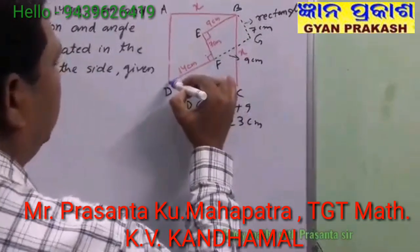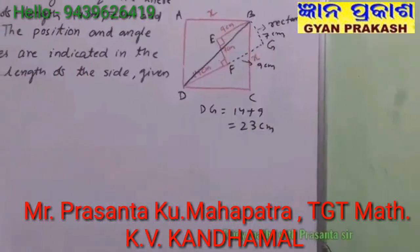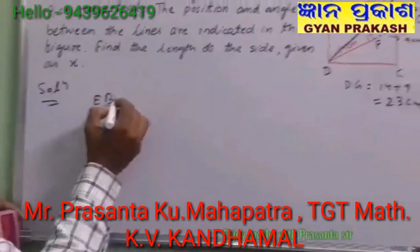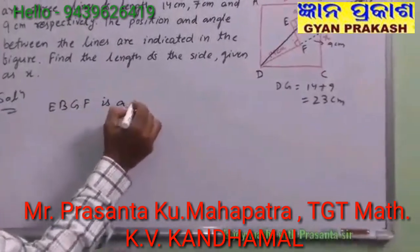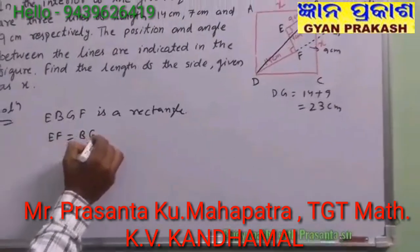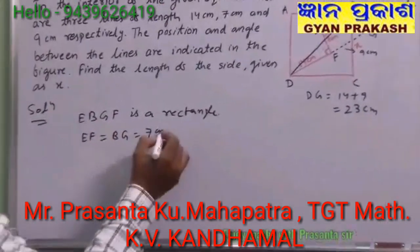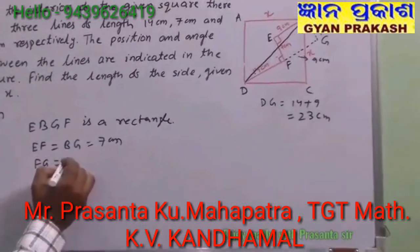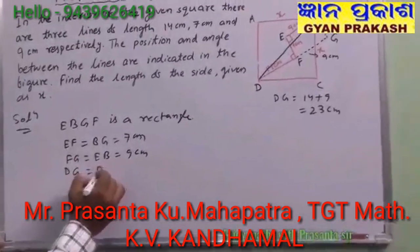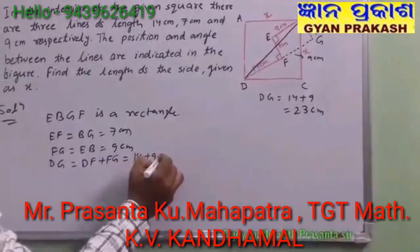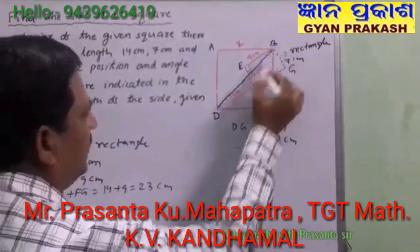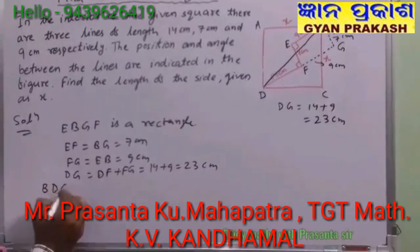Now let us join DB. In this diagram, we found that EBGF is a rectangle, so EF equals BG, which gives us 7 cm, and FG equals EB, which is 9 cm. DG equals 23 cm. Now let us take triangle BDG. What type of triangle is it? It is a right triangle, as this angle is 90 degrees.